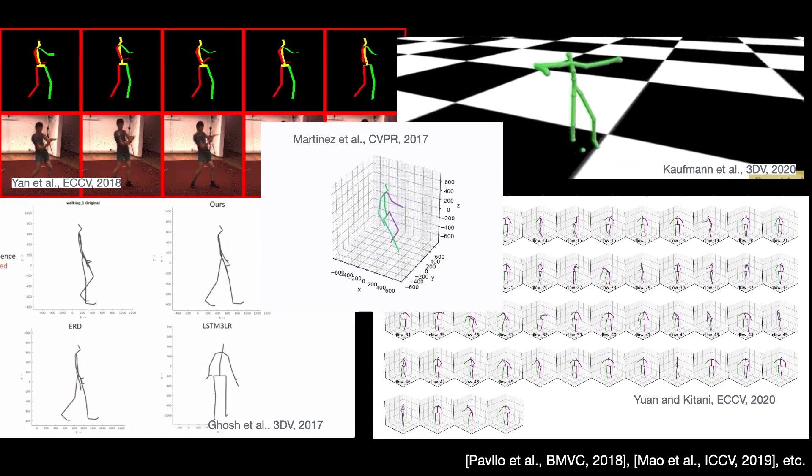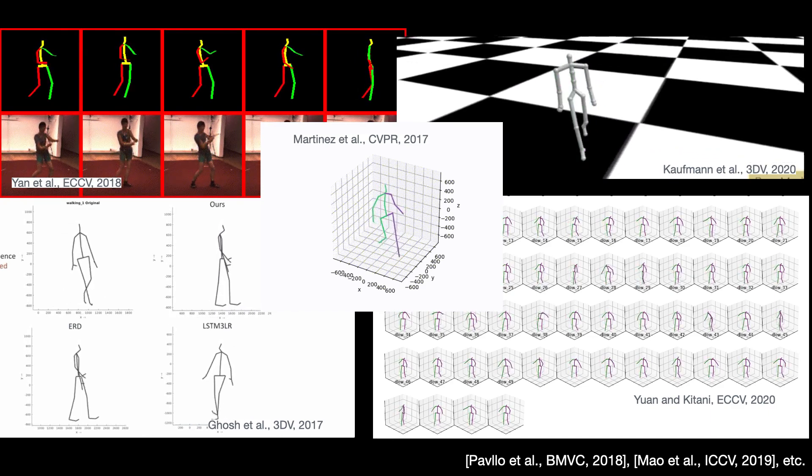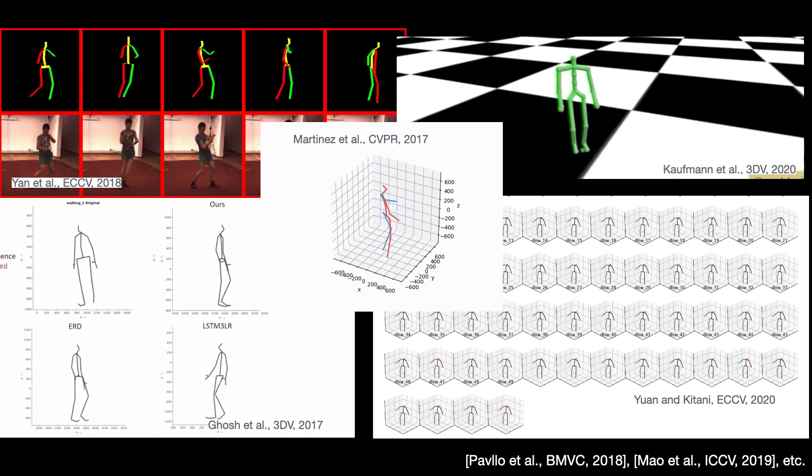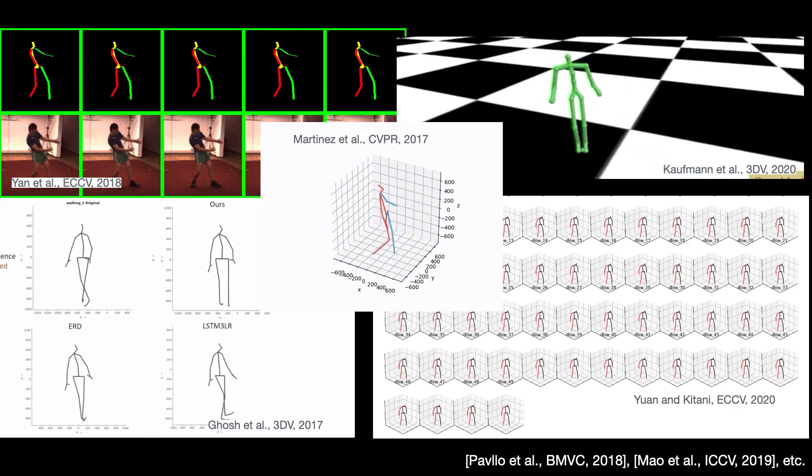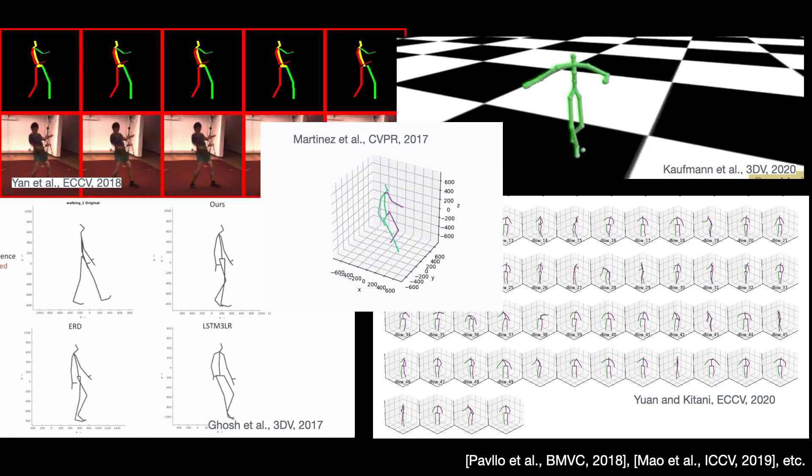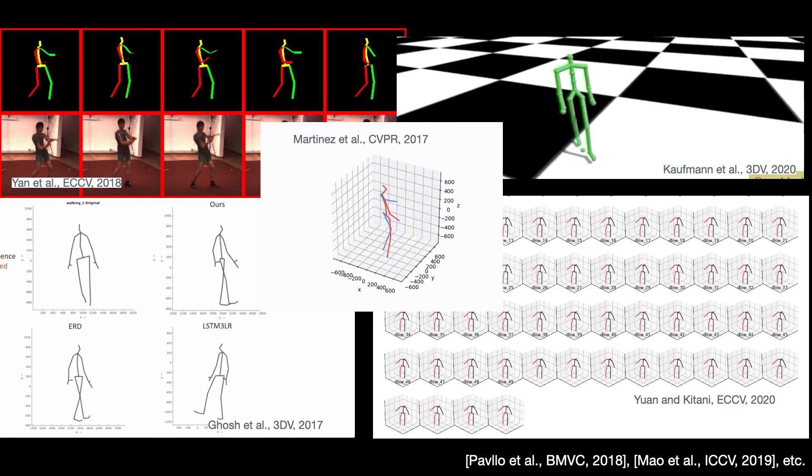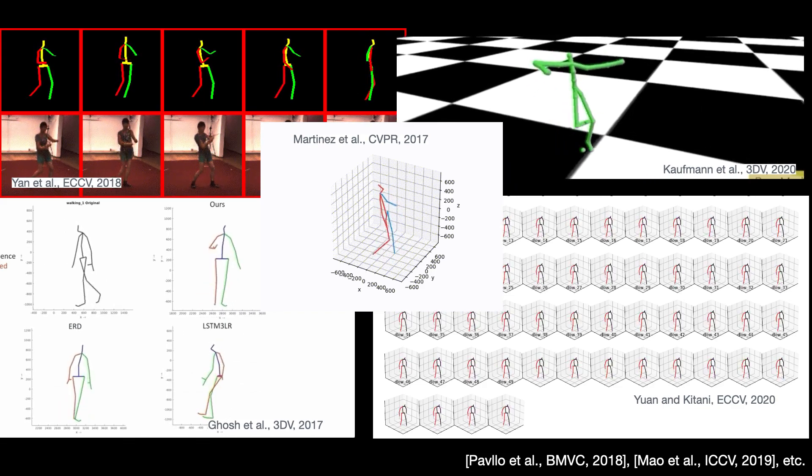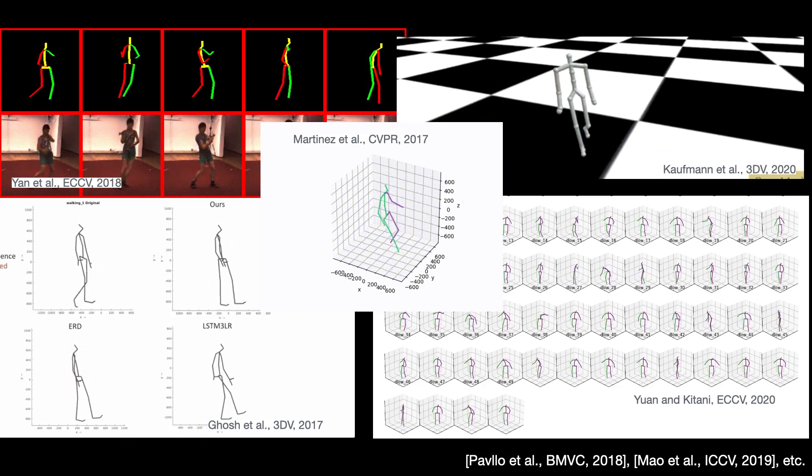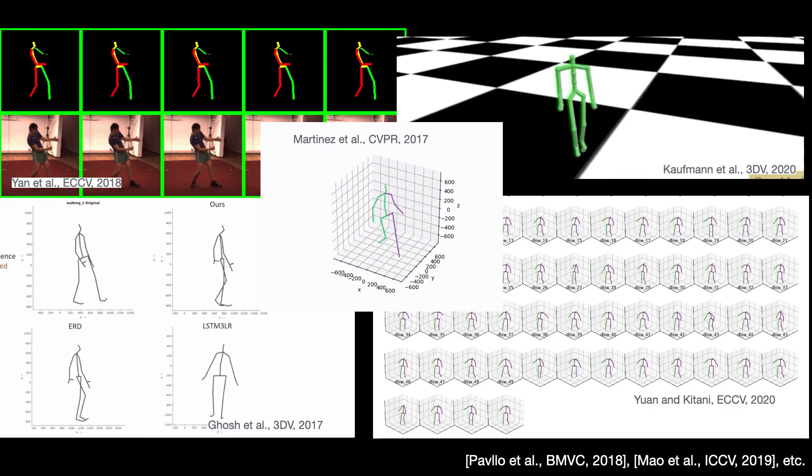While qualitative results showing rendered stick figures may look good to the eye, it is hard to see that the bone length may change, resulting in non-human body proportions. Finally, the joints cannot capture the nuanced details of how the body surface moves, limiting the realism of any resulting animation.